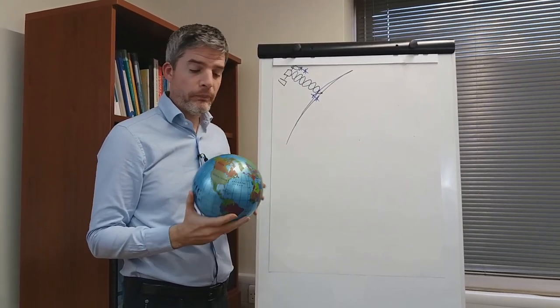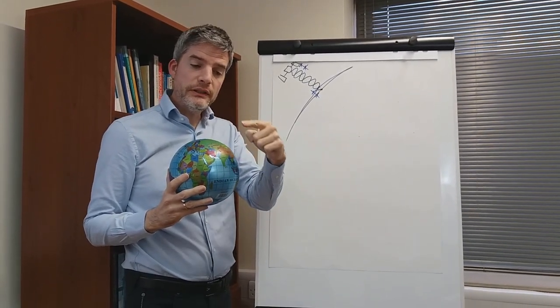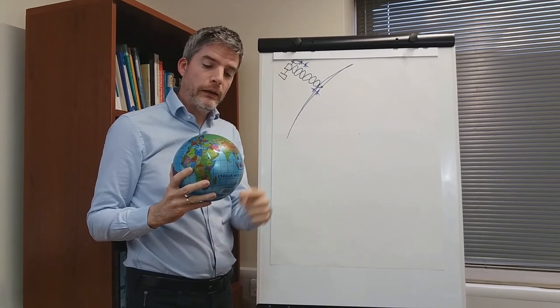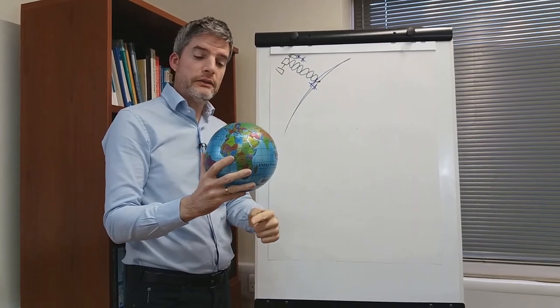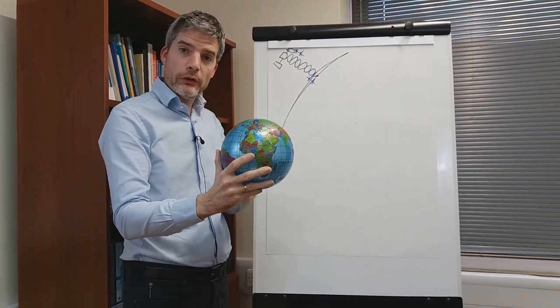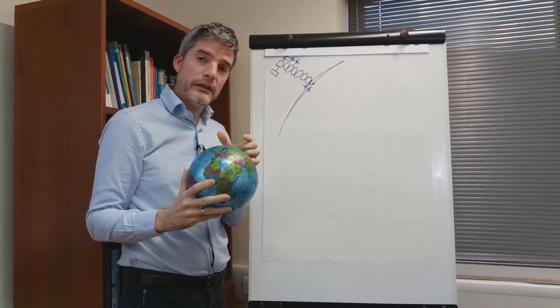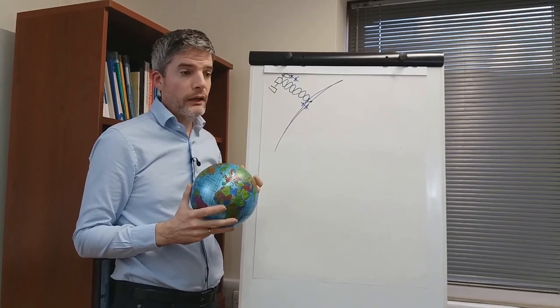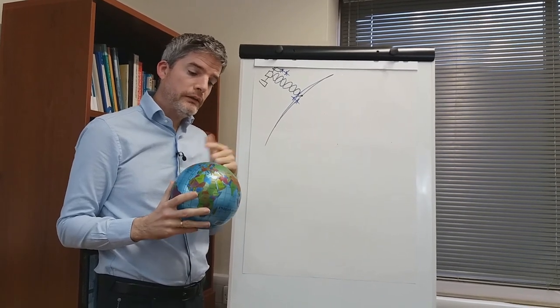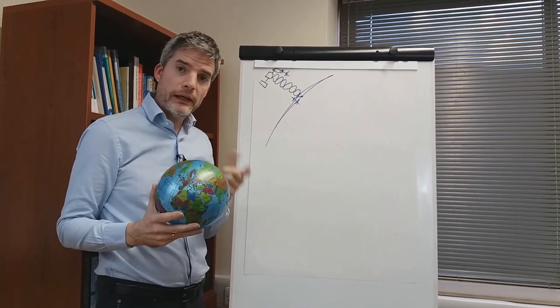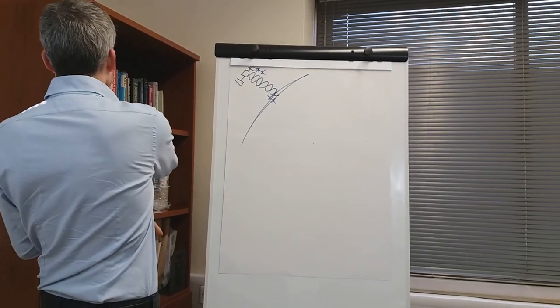And in the case of Sentinel it will pass over and observe exactly the same point every 12 days, but when it makes an observation in this direction called descending from north to south that has a slightly different geometry to when the satellite is observing the earth in an ascending orbit from south to north. So it may observe a point either in a descending or an ascending orbit and in the case of Sentinel then it does one or the other every six days so you'll get a descending orbit observation every 12 days and an ascending every 12 days in between so you get an observation every six days.